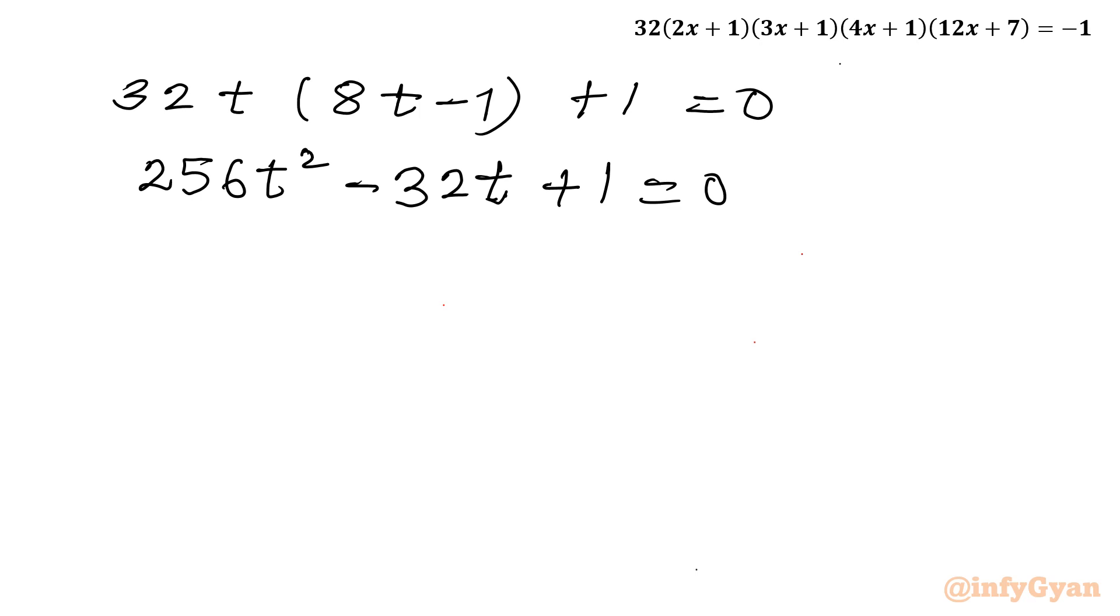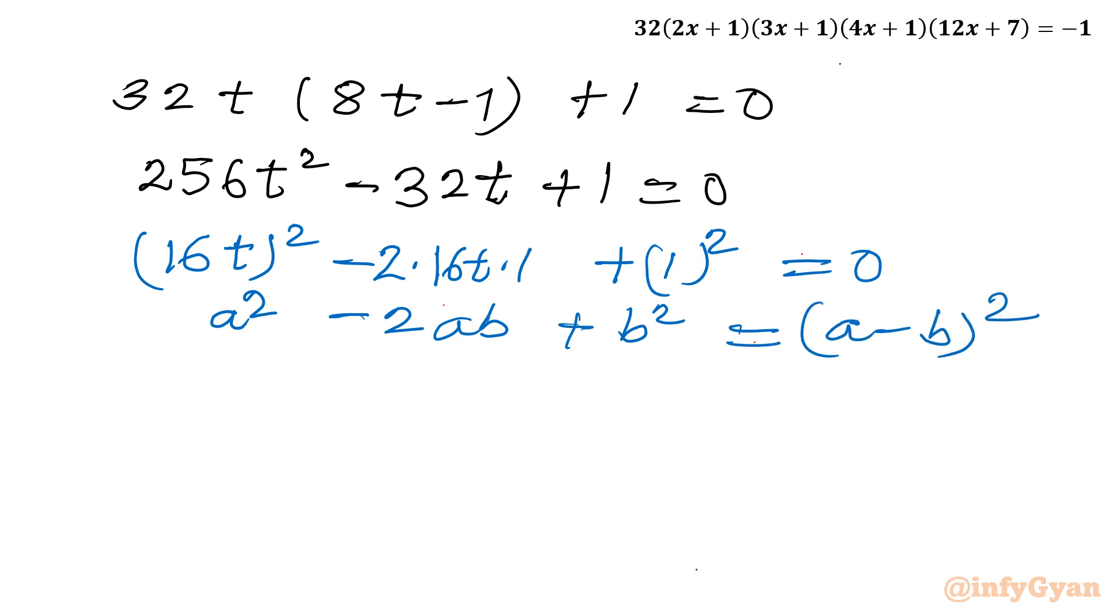Now you can see this is creating one algebraic identity actually. 256 is 16 squared. So let me write this is (16t) whole squared. Come to the last term, it is 1 whole squared. RHS is 0. Now come to this middle term: 2 times 16t times 1, so it is 32t. Now you can see it is a squared minus 2ab plus b squared. One algebraic identity. So I can write this is (a minus b) whole squared. Now I will write our equation: (16t minus 1) whole squared equal to 0.